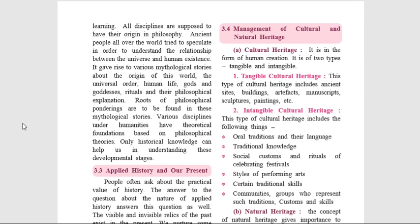Let us see management of cultural and natural heritage. The first one: cultural heritage. It is a form of human creation which is of two types — tangible and intangible. Tangible cultural heritage refers to physical artifacts produced, maintained and transmitted down the generations in our society. It includes ancient sites, buildings, monuments, artifacts, manuscripts, sculptures, paintings, etc., which can be seen and touched.